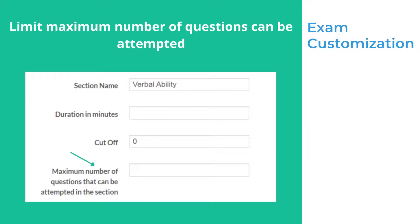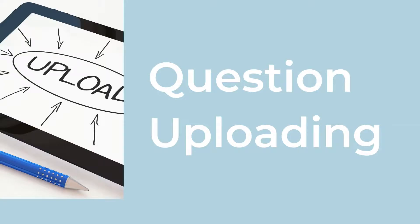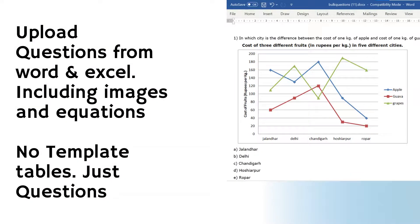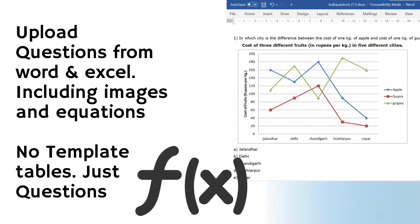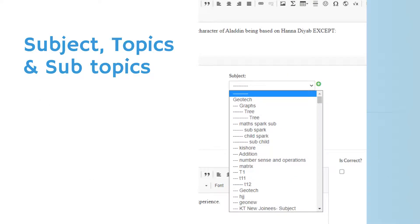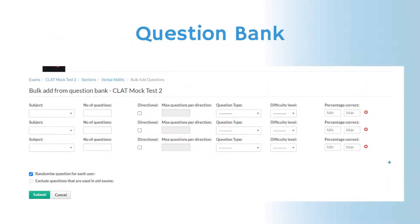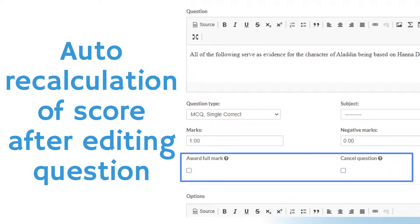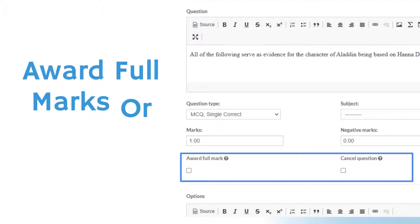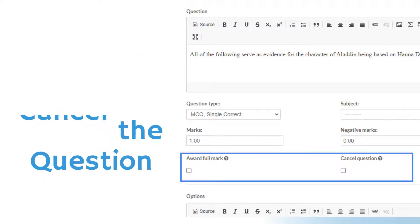Admins can limit the maximum number of questions that can be attempted in a section or exam — using this, the new IIT JEE Main and Advanced pattern can be simulated. Questions can be bulk uploaded directly from a Word document or Excel without any specific templates, including equations and images. Questions can be tagged by subject, topic, subtopic, and difficulty level. Question bank functionality is available to reuse questions. If an error is found in a question after exam completion, admins can edit the question or answer key, and scores and ranks will be recalculated automatically. If the examiner thinks a question is invalid, they can cancel it or award full marks.